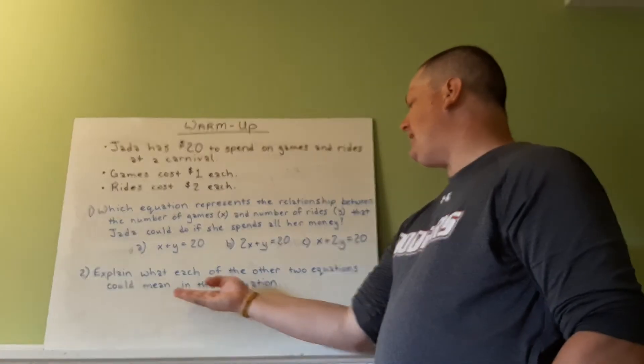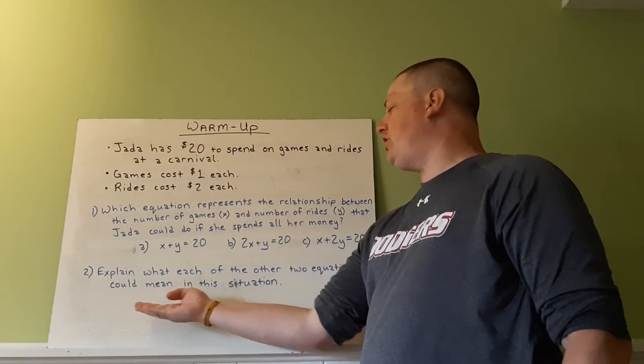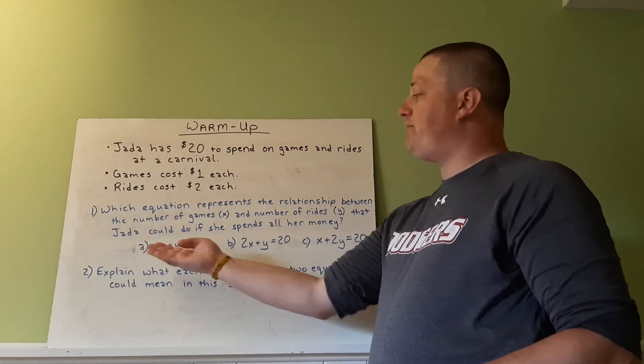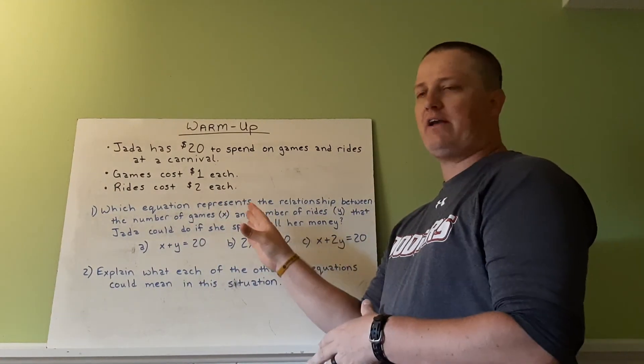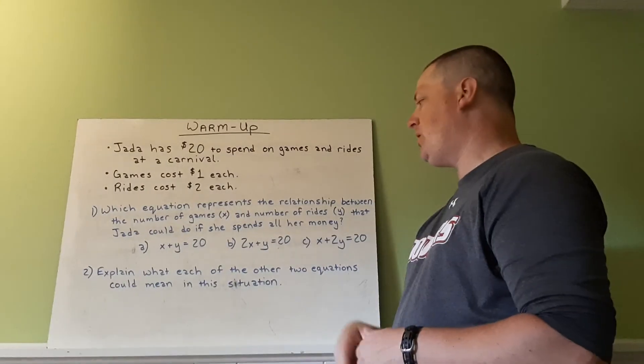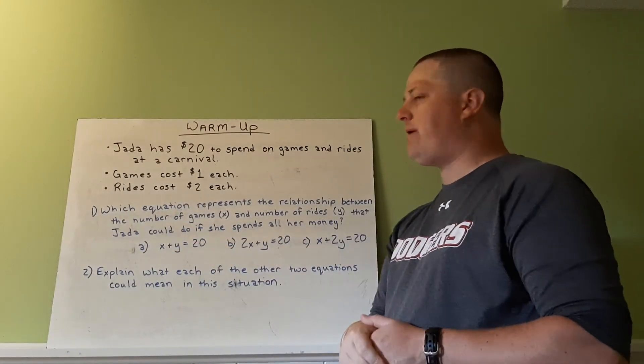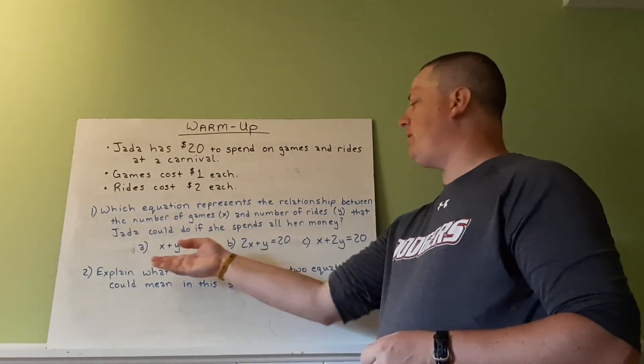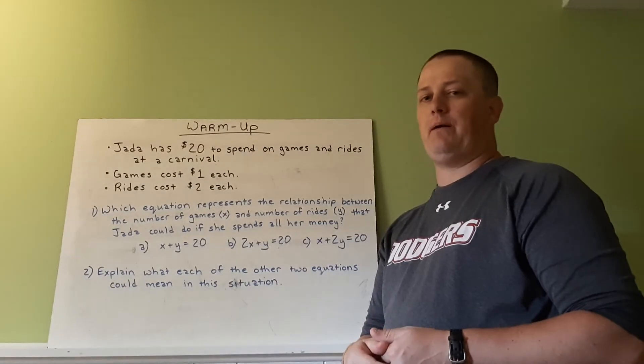Then explain what each of the other two equations could mean in this situation. So if you pick A as the correct one, then what could B and C actually represent? Or vice versa, if you pick B, what would A and C represent? Or if you pick C, what would A and B possibly represent?